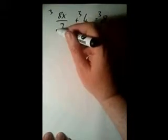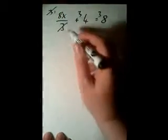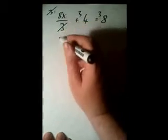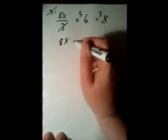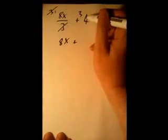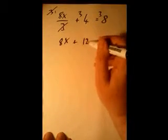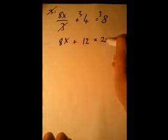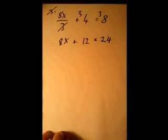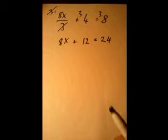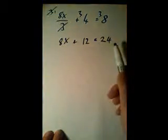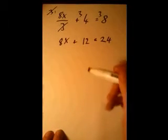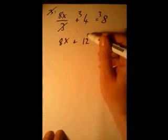We have to multiply every term by 3 — that's important. Then we simply cancel: 3 goes into 3 once. We're left with 8x, plus 3 times 4 which is 12, equals 3 times 8 which is 24. You can see we've gotten rid of the fraction straight away, and now it looks a lot simpler.